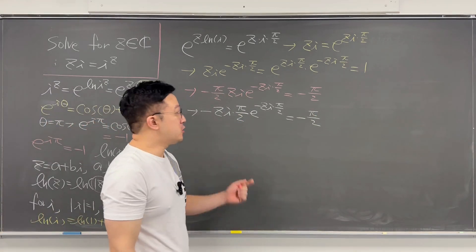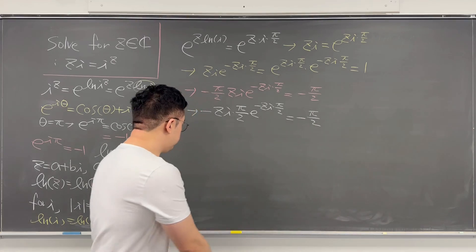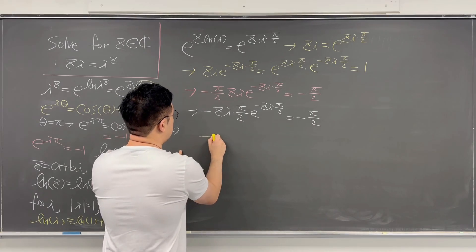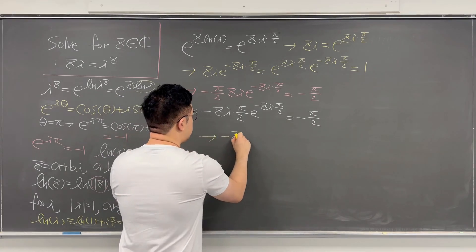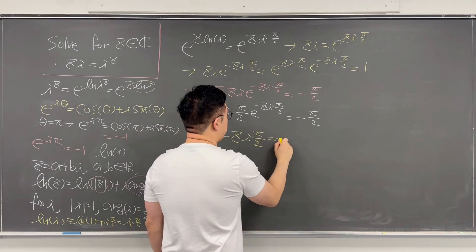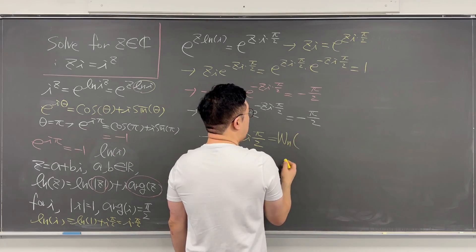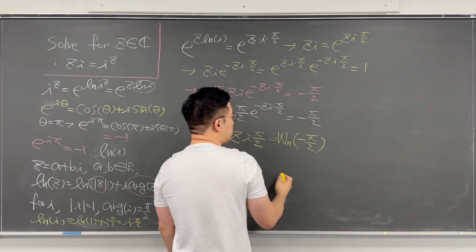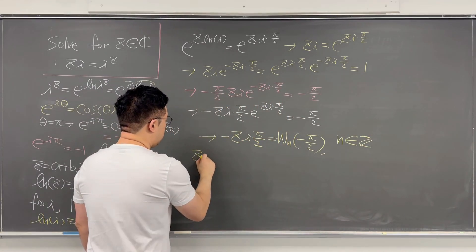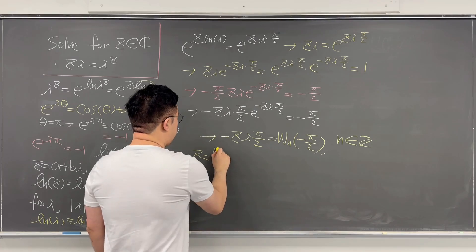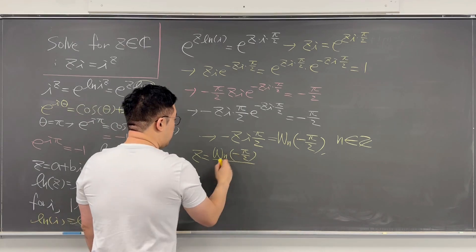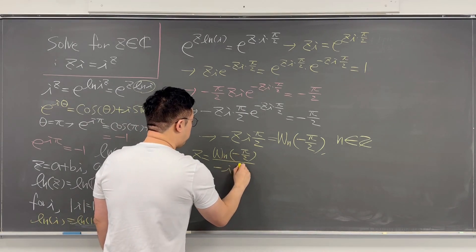We are making the form ready for the Lambert W function. Switching the order, we have negative z*i times pi/2, times e to the power of negative z*i*pi/2, equals negative pi/2. So we can say negative z*i*pi/2 equals Lambert W_n of negative pi/2, where n is an integer. Therefore z equals Lambert W_n of negative pi/2, over negative i times pi/2.